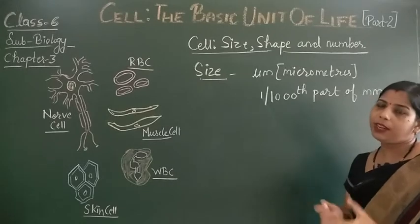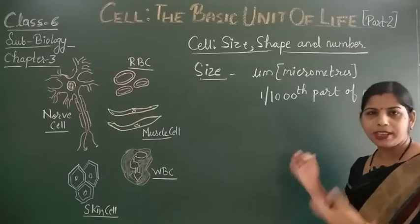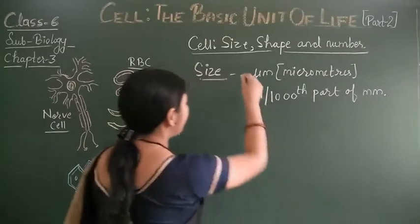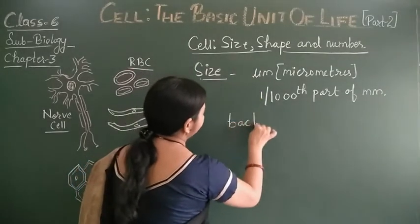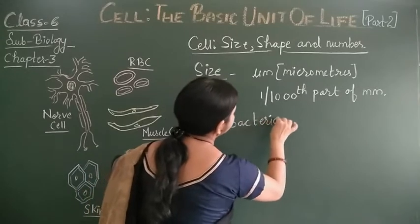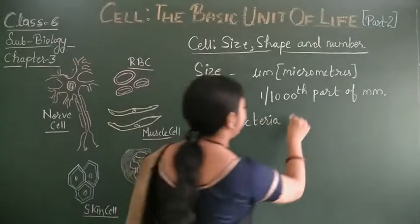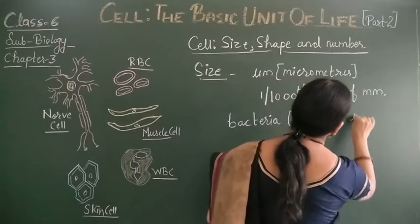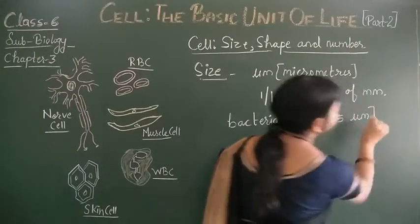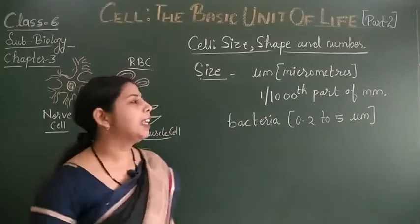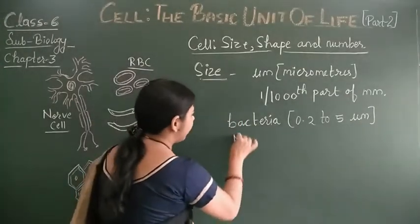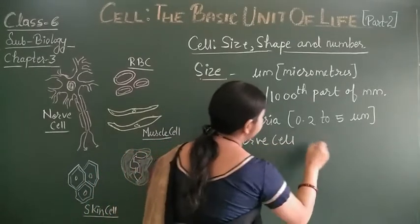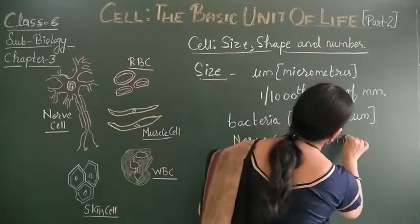But some cells we can also observe with our eyes. So let's see which is the smallest and the largest cell. The small bacteria range from 0.2 to 5 micrometers. And if we discuss the longest cell, that is the nerve cell, which is approximately 1 meter long.